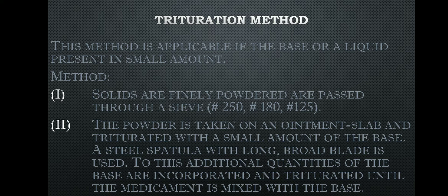The first step is that the solid medicaments are finely powdered and passed through sieves of 250, 180, and 125 mesh to ensure a fine powder. The powder or solid ingredients are then placed on an ointment tile or ointment slab. A small amount of the ointment base is added first, mixed thoroughly, then more base is added progressively until all the base and medicaments are homogeneous.